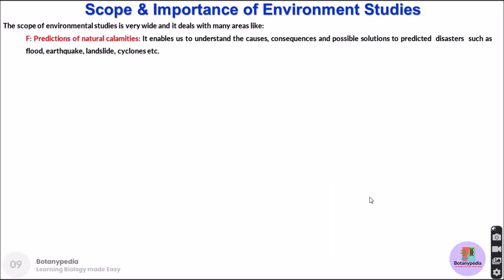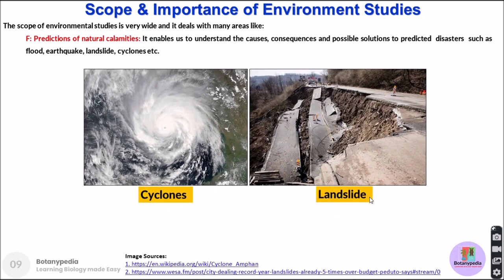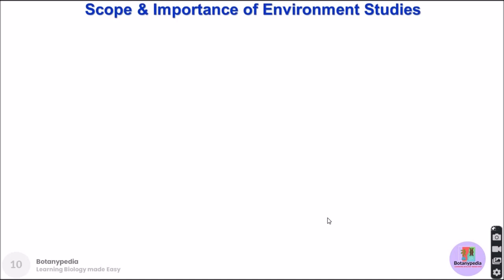There is also a scope of environmental studies that deals with the prediction of natural calamities. This domain helps us understand the causes, consequences, and possible solutions to predicted disasters such as floods, earthquakes, landslides, and cyclones. On the left, a picture shows how a cyclone can have a devastating impact on coastal areas. On the right, a picture shows a road being swept away by a heavy landslide in a hilly area. Different departments are tackling each of these aspects.